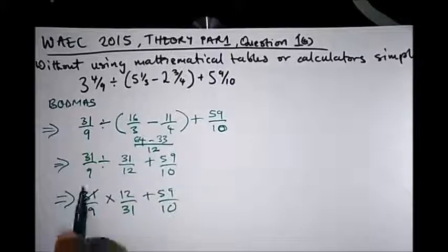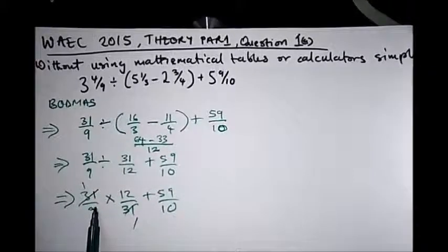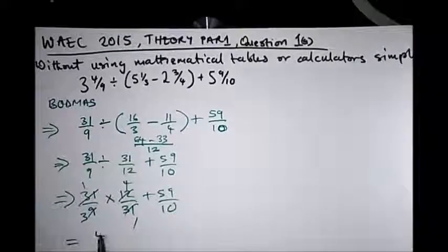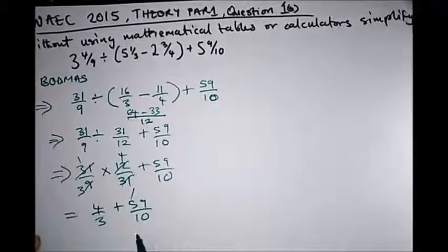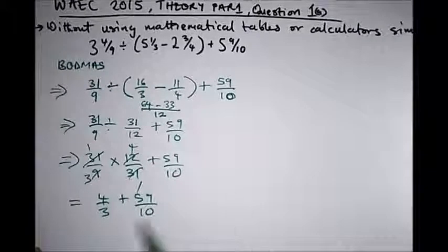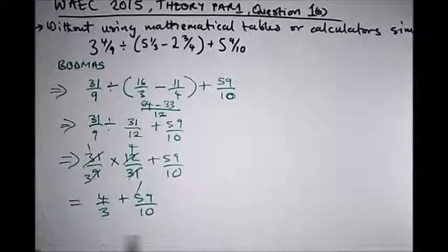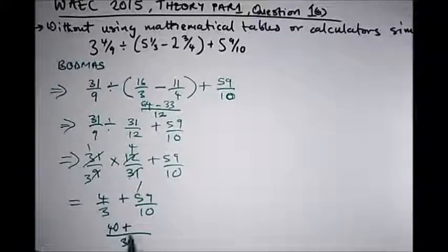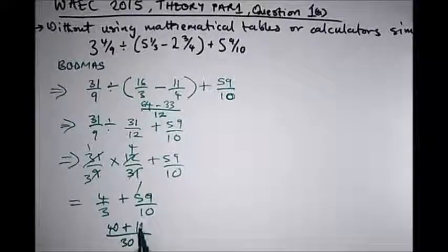So from here: 31 cancels with 31 leaving 1; 3 goes into 9 three times, and 3 goes into 12 four times. We're left with 4 over 3, plus 59 over 10. Now we perform addition. The LCM of 3 and 10 is 30. 10 goes into 30 three times — 3 times 4 gives 40. 3 goes into 30 ten times — 10 times 59 gives 590. Wait, that should be: 10 times 4 is 40, and 3 times 59 is 177.